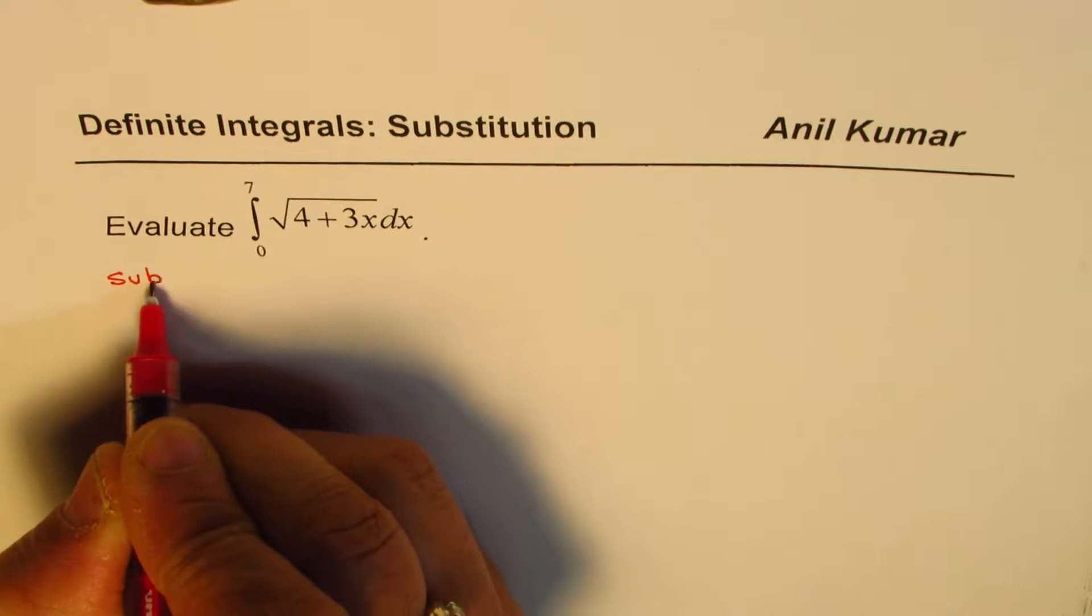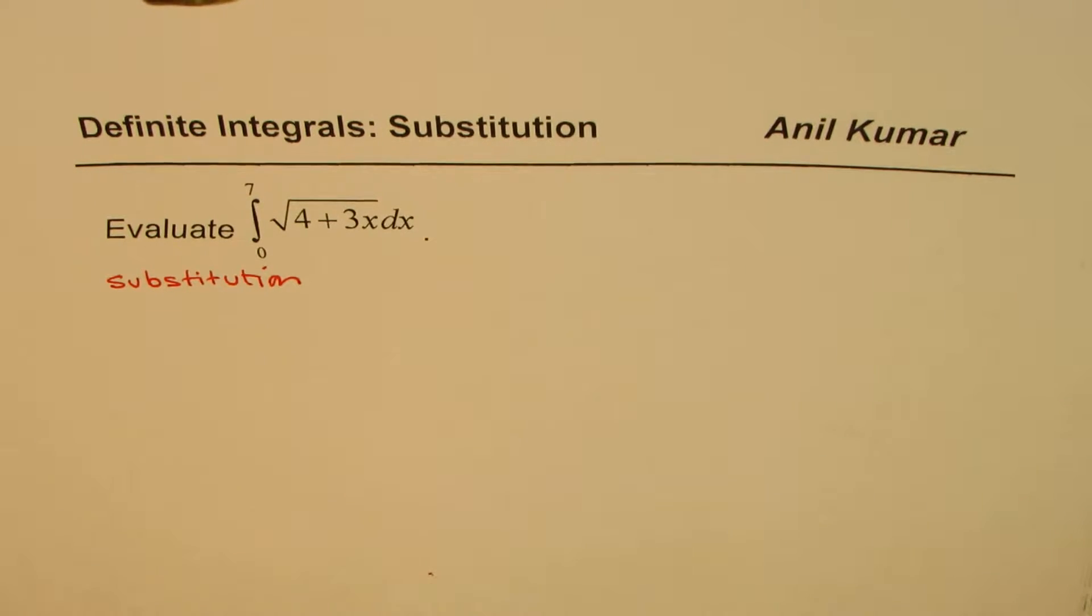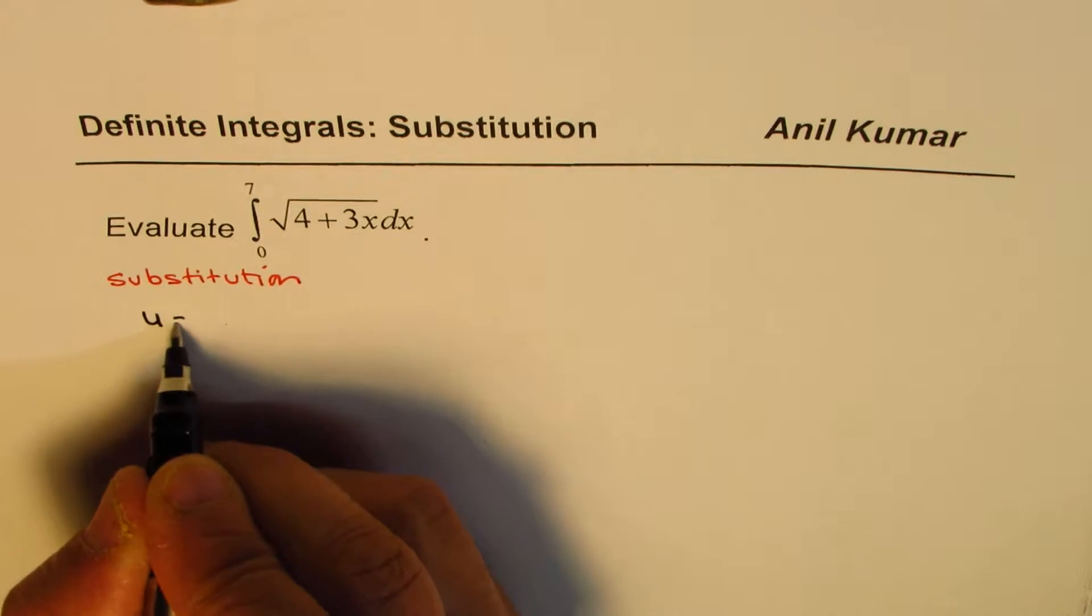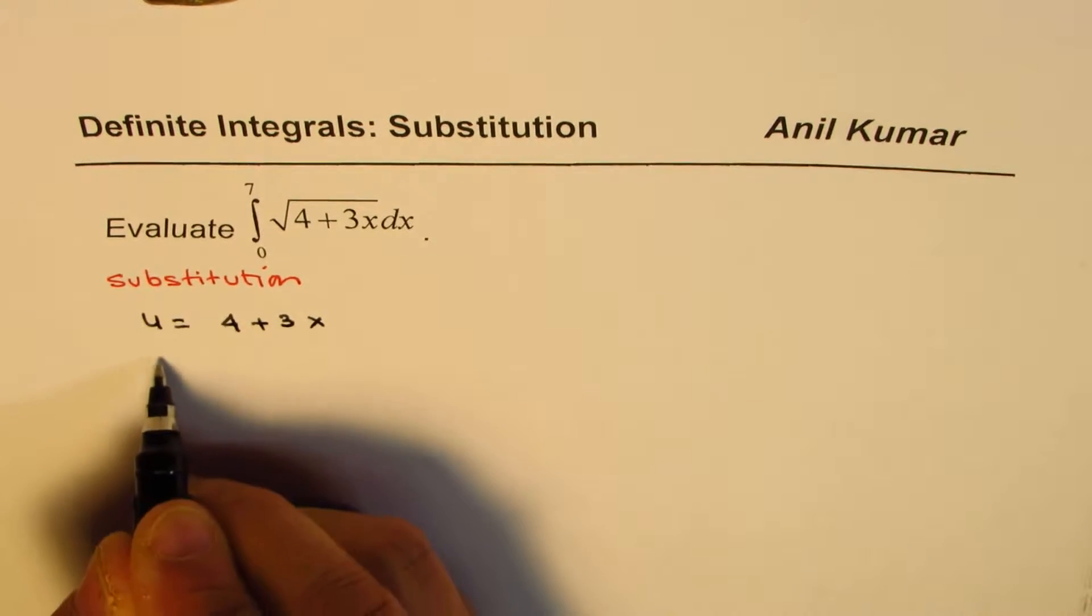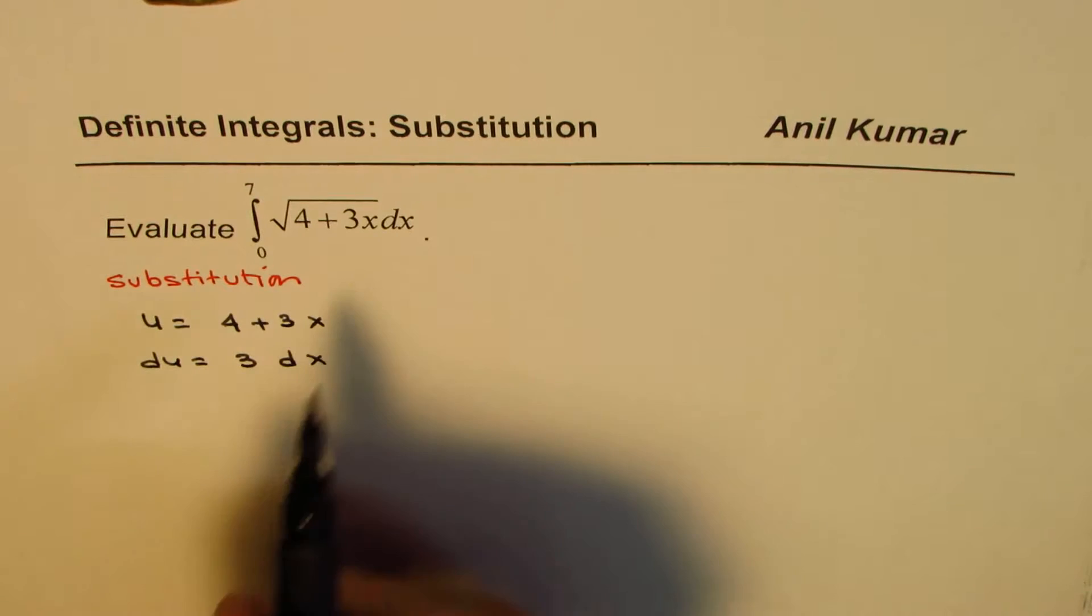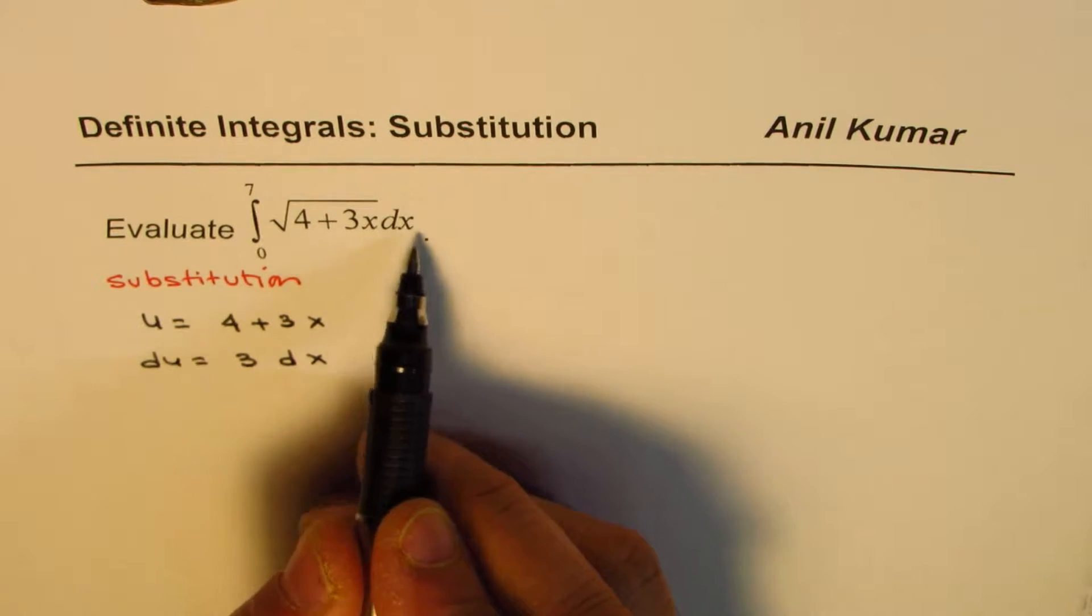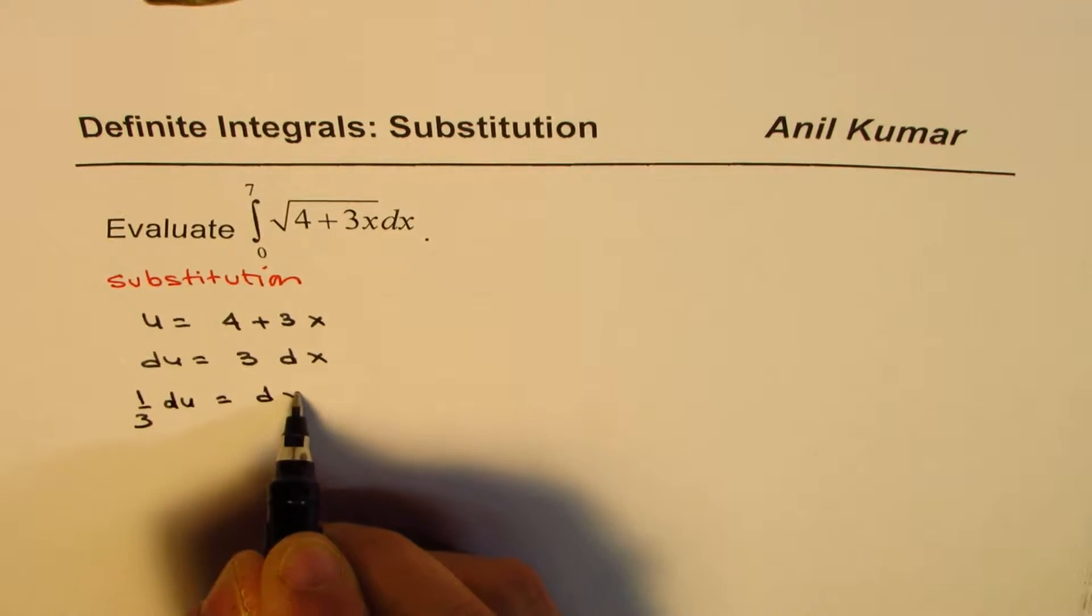We'll make a substitution here. We can write u equals to 4 plus 3x. In that case, du will be equals to 3 dx. Now, we have to substitute for x. We could write 1 over 3 du equals to dx.